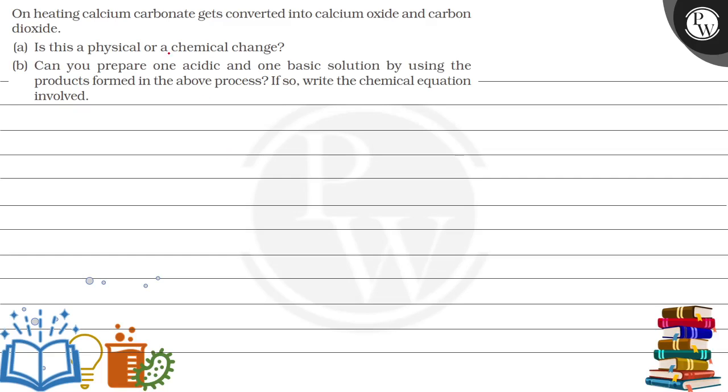Hello, let's see this question: On heating, calcium carbonate gets converted into calcium oxide and carbon dioxide. Is it a physical or a chemical change? Can you prepare one acidic and one basic solution by using the products formed in the above process? If so, write the chemical equation involved.